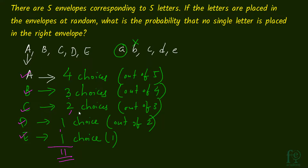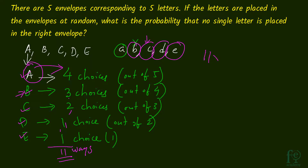So the total number of ways for one fixed position of A: B has 3 choices, C has 2, D has 1, E has 1 — giving 3+2+1+1 = 7... adding up: 4+3+2+1+1 = 11 ways of sending A, B, C, D, E to wrong envelopes for one scenario. Now A itself can go to any one of 4 envelopes. Depending on which envelope A chooses, the remaining choices differ. So the total number of ways will be 11×4 = 44.